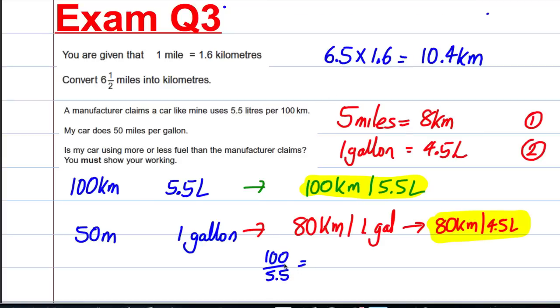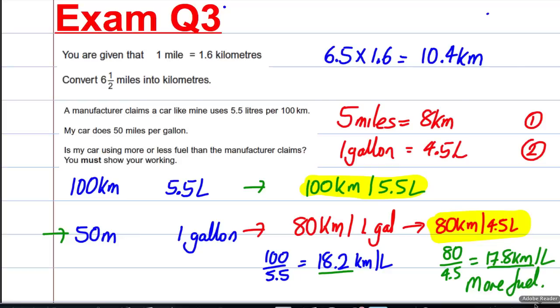This is 100 kilometres per 5.5 litres and 80 kilometres per 4.5. So if we did 100 divided by 5.5 in the first instance, that's 18.2 kilometres per litre. And for this one, 80 divided by 4.5, that's equal to 17.8 kilometres per litre. So my car, which was this one, is 17.8 kilometres per litre. And the manufacturer is actually 18.2 kilometres per litre. Is my car using more or less fuel than the manufacturer claims? Well, we're going 17.8 kilometres per litre. So that means I'm not going as far for the same amount of fuel, so I'm actually using more fuel.